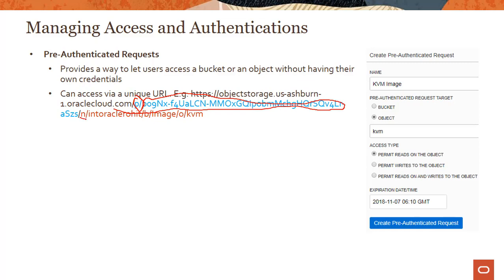If you remember from the previous module, slash N is the namespace, slash B is the bucket, slash O is the object, and slash P shows that this object is being accessed using a pre-authenticated request. You can revoke the links at any time. So if you give users access to a bucket or an object without having their own credentials and their job is done, you can always revoke the links and they will lose access to the object or the bucket going forward.